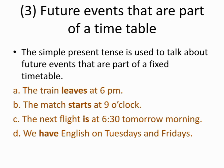The third use: future events that are part of a timetable. The simple present tense is used to talk about future events that are part of a fixed timetable. Examples: 'The train leaves at six p.m.' 'The match starts at nine o'clock.' 'The next flight is at six thirty tomorrow morning.' 'We have English on Tuesdays and Fridays.'